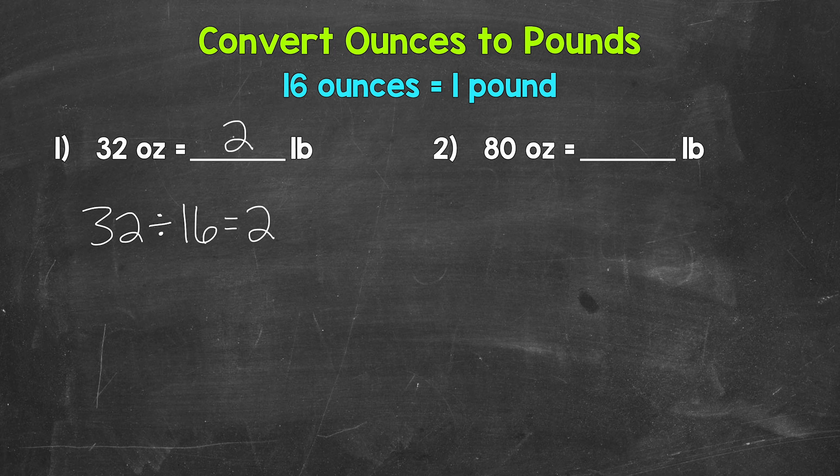Again, because 16 ounces equals one pound. Let's move on to number two where we have 80 ounces. So how many groups of 16 ounces here? How many pounds does 80 ounces equal?